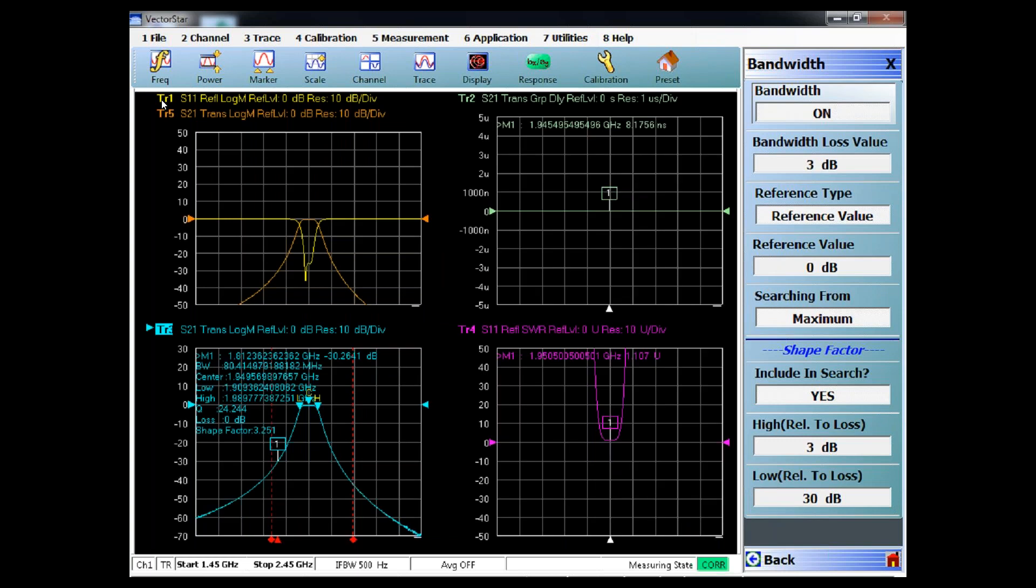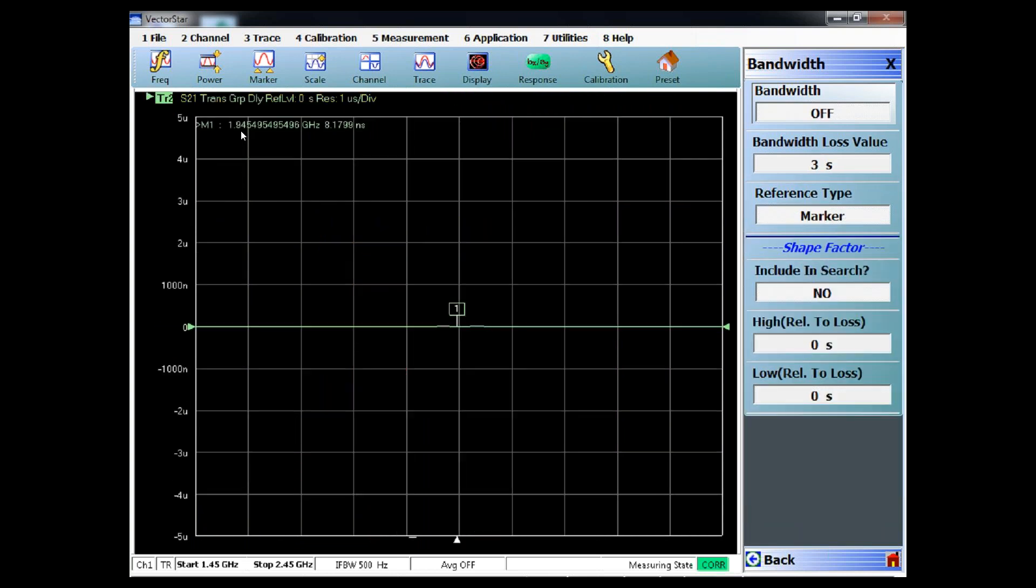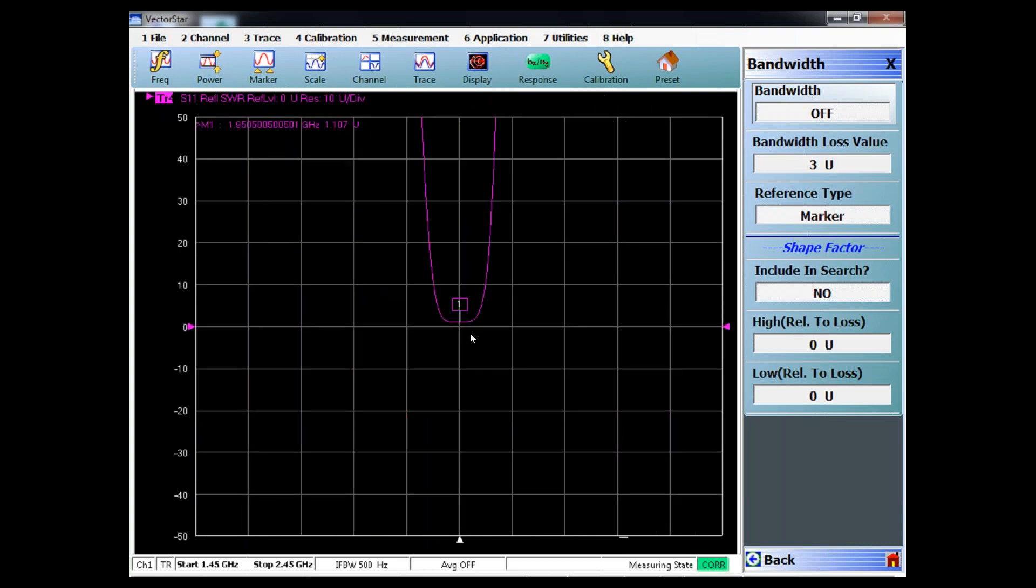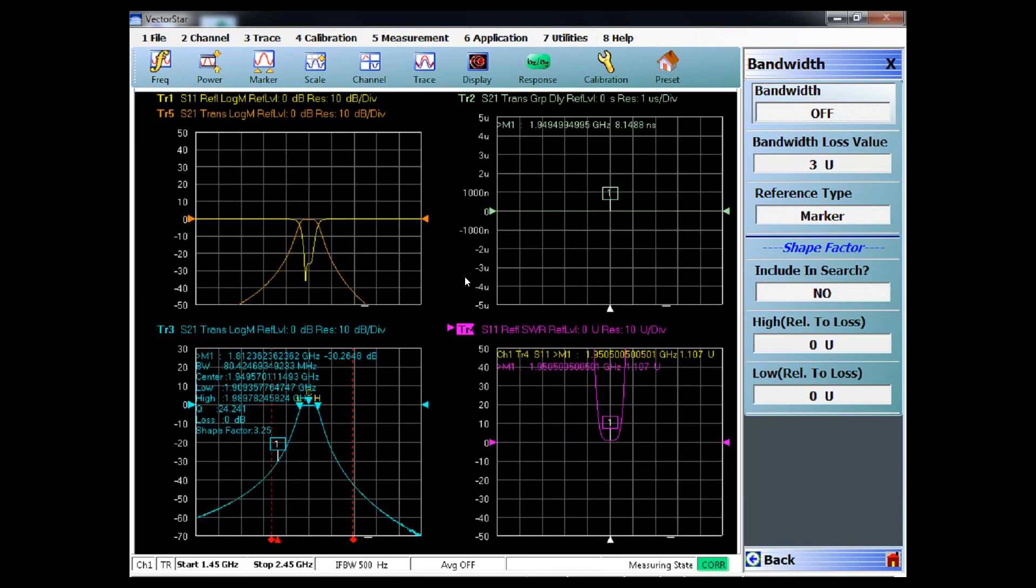Another common measurement for a filter is group delay. You'd move your marker to the frequency where it functions, and you can see that our group delay is 8.1 nanoseconds. Another common measurement is VSWR, and within the pass band, you'll have a specification. In our case, this is 1.107.